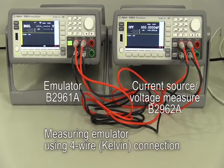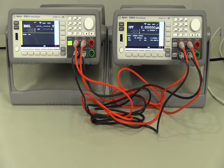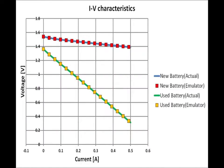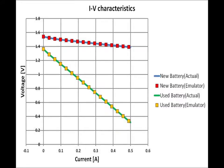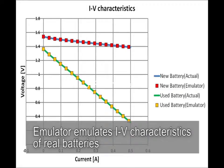And then, start measuring. The same way, I can do the same with the used battery. This is the result. Lines show the measurement result of actual batteries, and squares show the measurement result of the emulators. As you can see from this graph, they are exactly the same. By using the emulator, battery's current-voltage characteristics can be emulated like this.